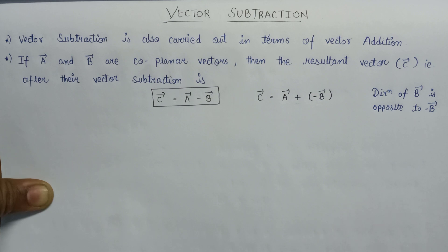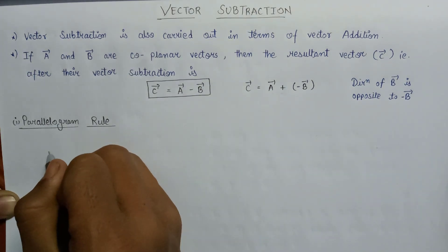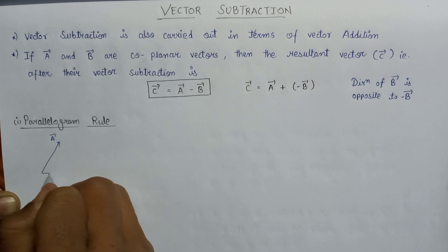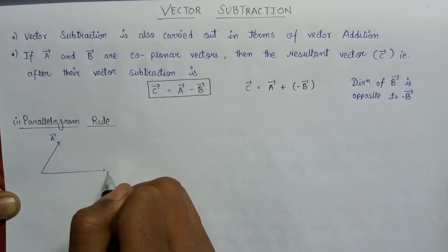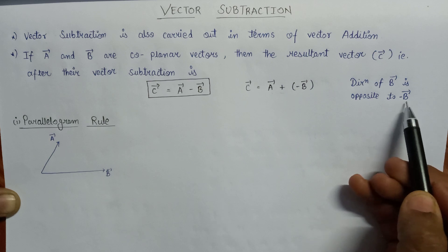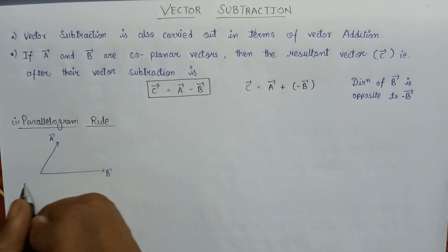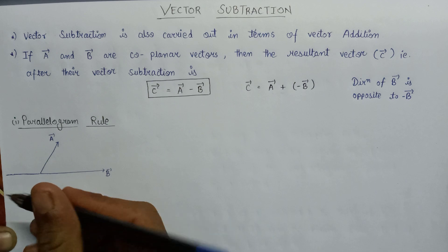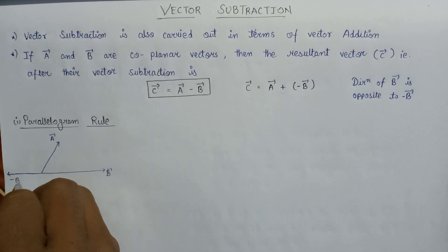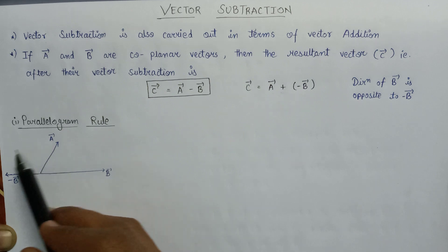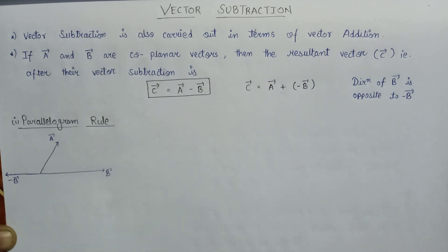The first rule is the parallelogram rule. According to the parallelogram rule, here is the A vector and here is B vector. Since the direction of B vector is opposite to the direction of minus B vector, if we draw minus B vector it will be in the opposite direction of B vector. So here is minus B vector, and if we draw the parallelogram associated with minus B vector and A vector, it will be like this.